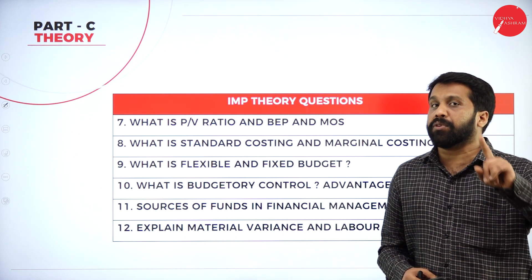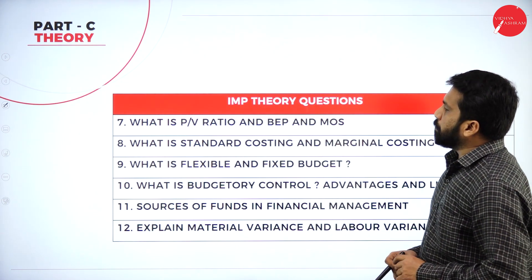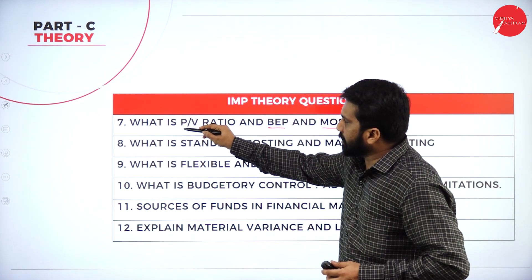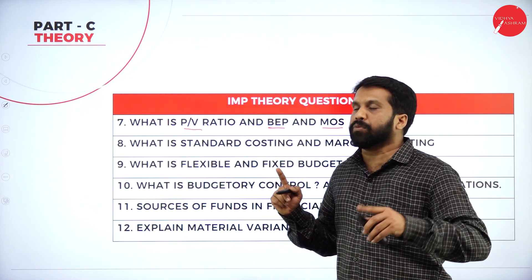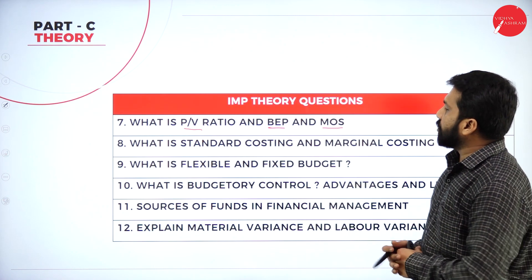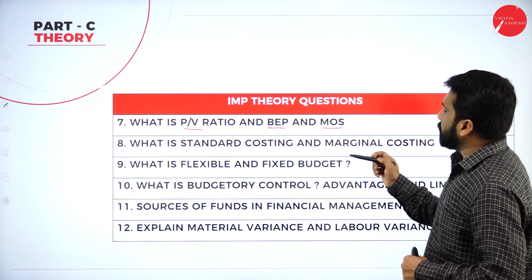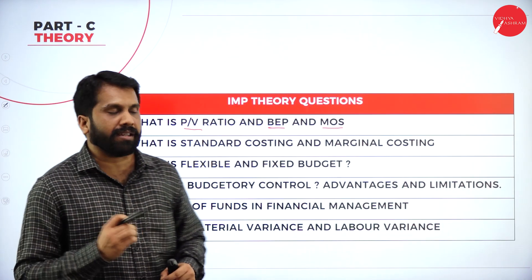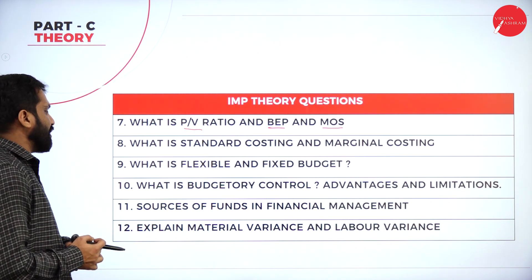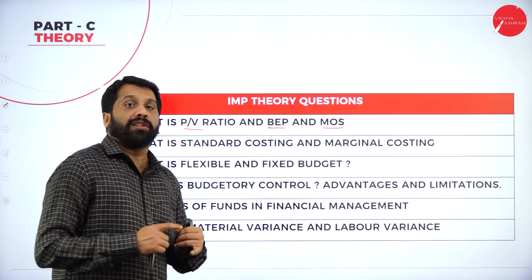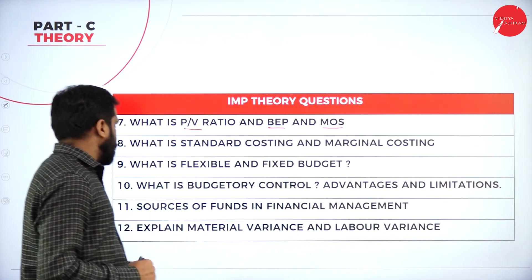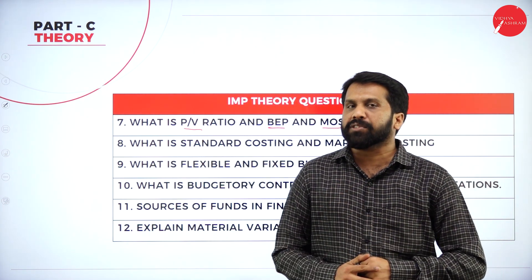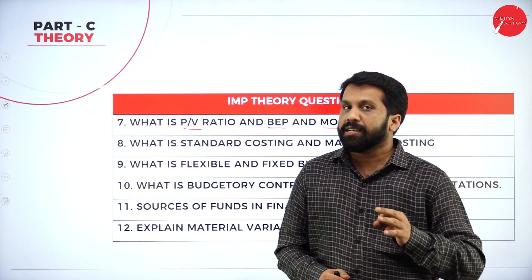Continuing the 12 important questions: 8) Standard costing and marginal costing. 9) Flexible and fixed budget. 10) Budgetary control — advantages and limitations. 11) Sources of fund in financial management — long-term and short-term. 12) Material variance and labor variance. These 12 questions cover a total of 12 topics that are essential for your examination.